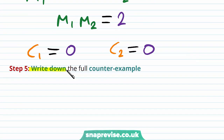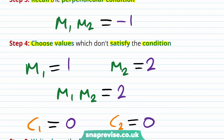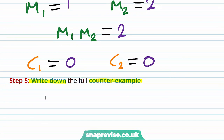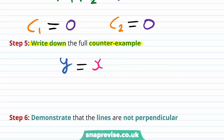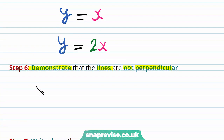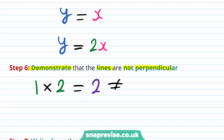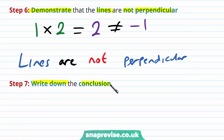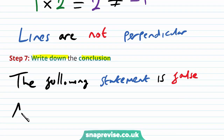Our fifth step is to write down the full counterexample. Our first line is y equals m1x plus c1, with m1 equals 1 and c1 equals 0, giving y equals x. Our second line is y equals 2x, because m2 is 2 and c2 is 0. Our sixth step is to demonstrate that the lines are not perpendicular: m1 times m2 equals 1 times 2 equals 2, which is not equal to minus 1. Hence the lines are not perpendicular. Our last step is to state the conclusion: the following statement is false — all lines in the xy-plane are perpendicular.